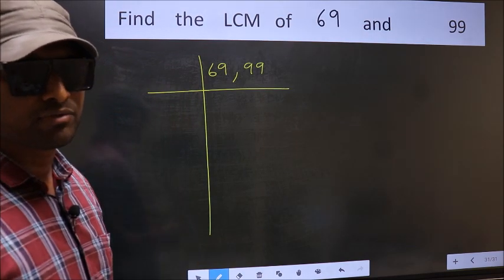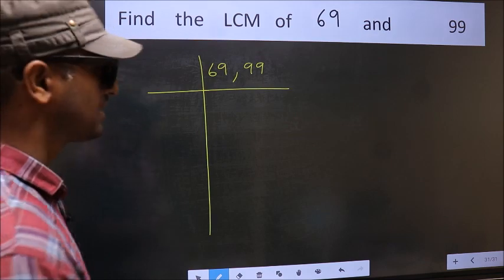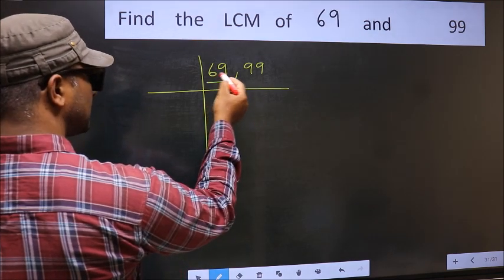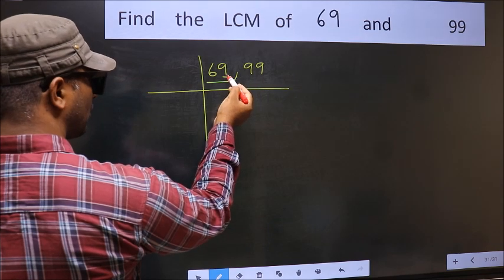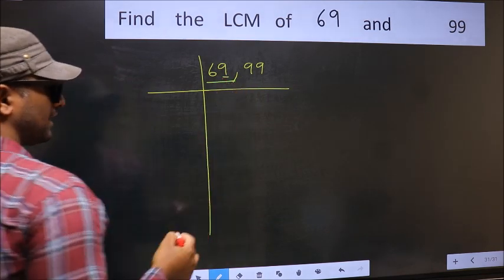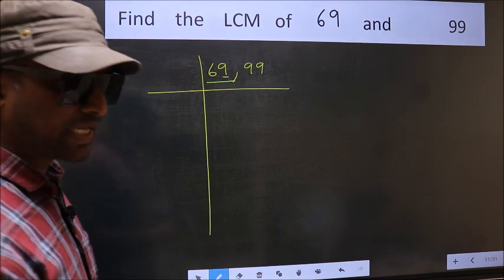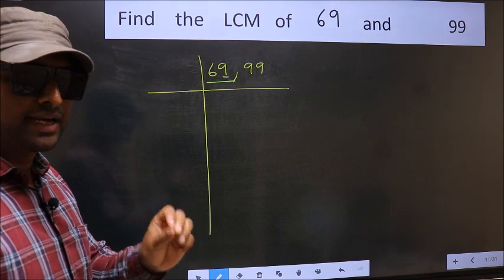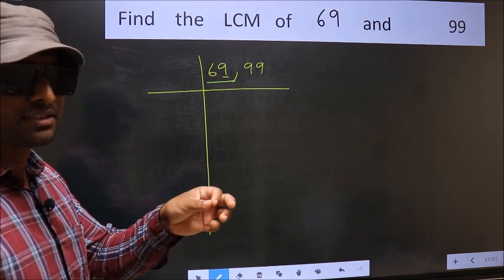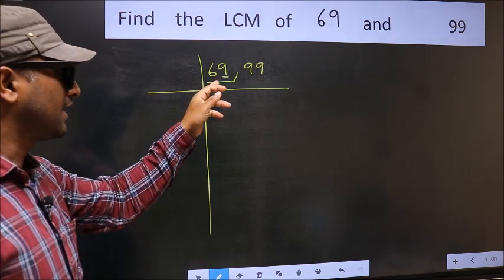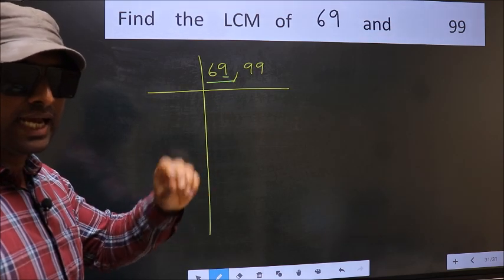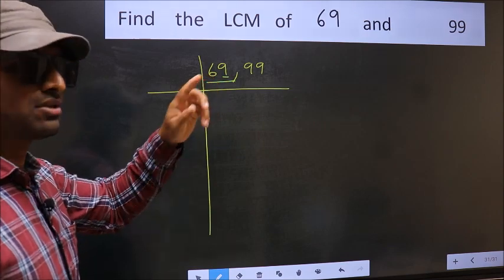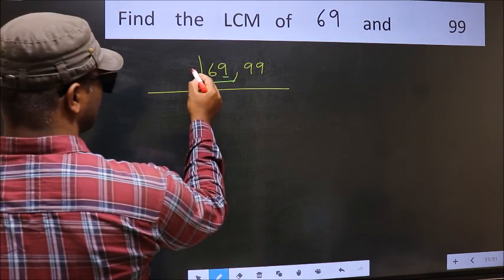Now you should focus on the first number which is 69 here. In this number, last digit 9, not even. So this is not divisible by 2. Next prime number 3. To check divisibility by 3, we should add the digits. 6 plus 9, we get 15 and 15 is divisible by 3. So this number also divisible by 3. So take 3.